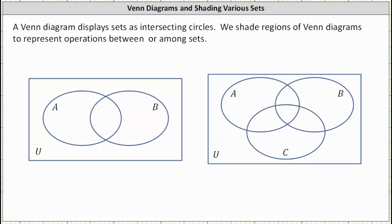A Venn diagram displays the sets as intersecting circles. Below are two examples of Venn diagrams where each rectangle represents the universal set, meaning the set of elements in which we are concerned about in a particular situation. And then each set is represented by a capital letter. We shade regions of Venn diagrams to represent operations between or among sets. Let's take a look at some examples.